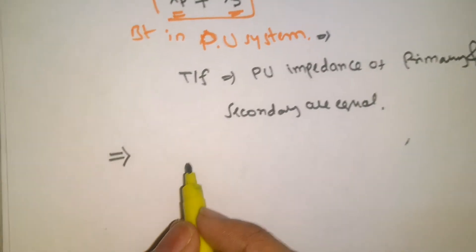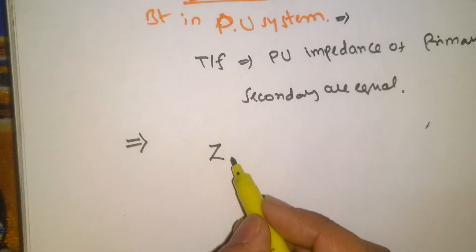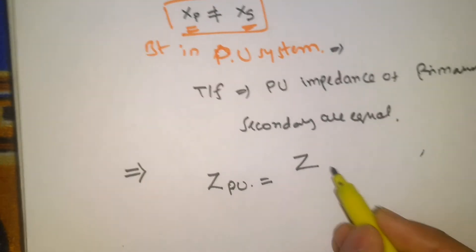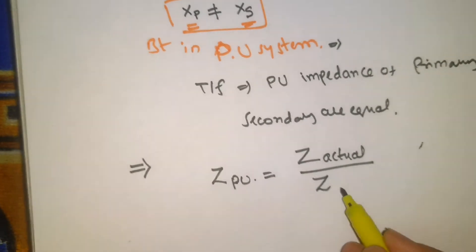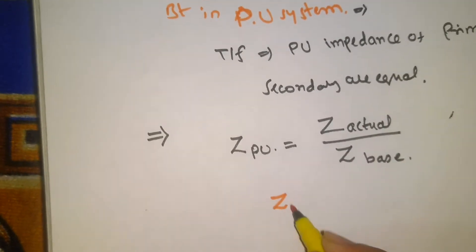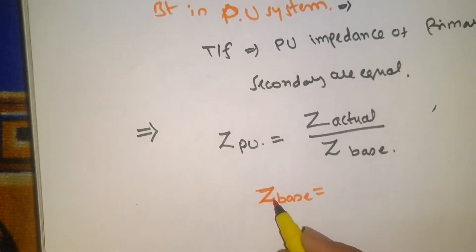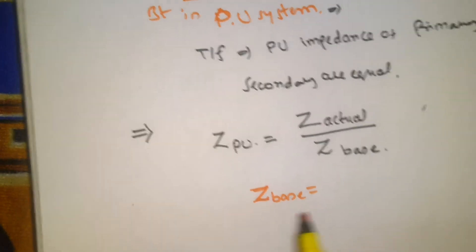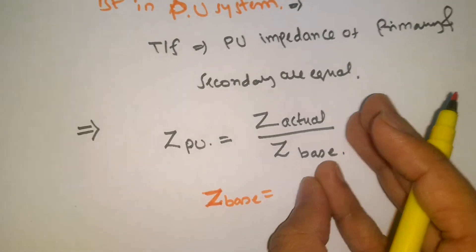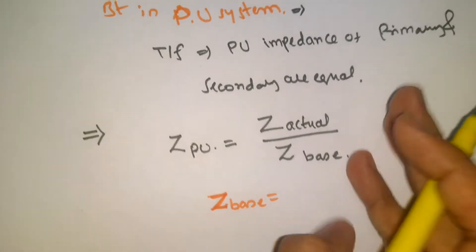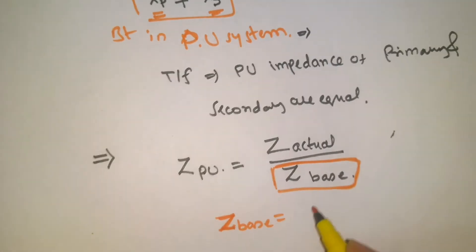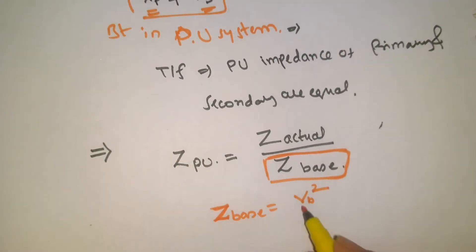Next, how to find impedance with new base values. I'm writing the very important formula for finding the per unit impedance. To get per unit impedance, we need the actual impedance value and the base impedance value. This formula is only for Z base impedance — not for base current, not for base voltage, not for base MVA. The formula is: Z base equals V base squared divided by MVA.